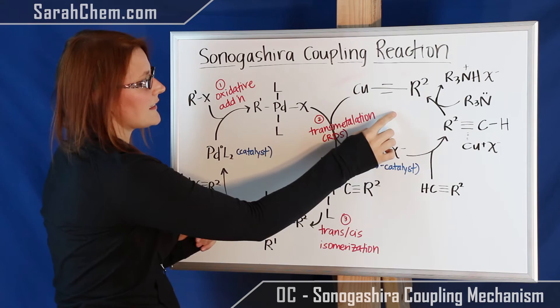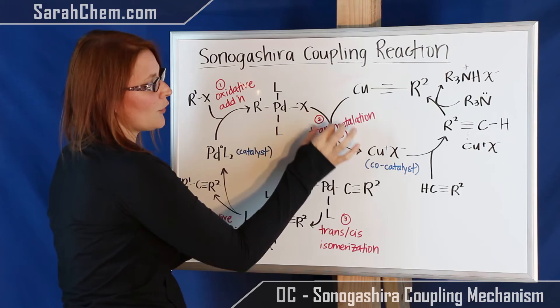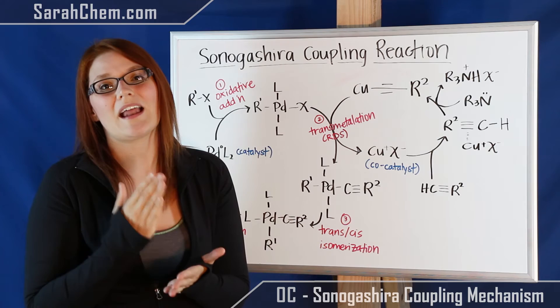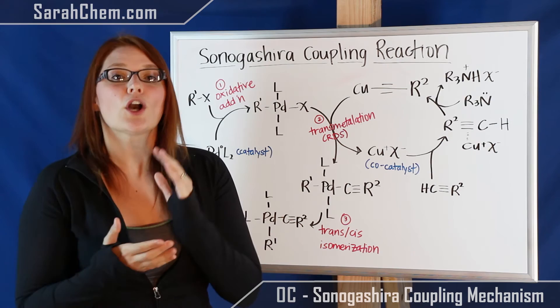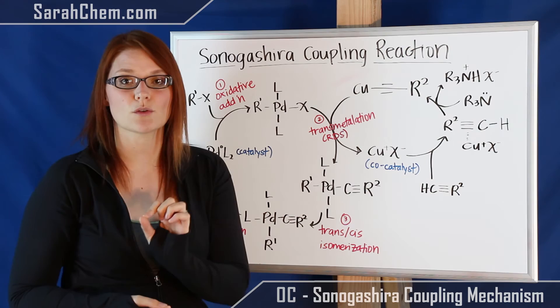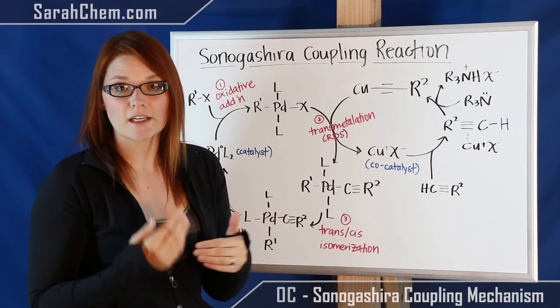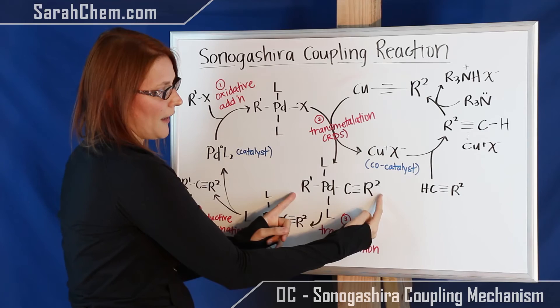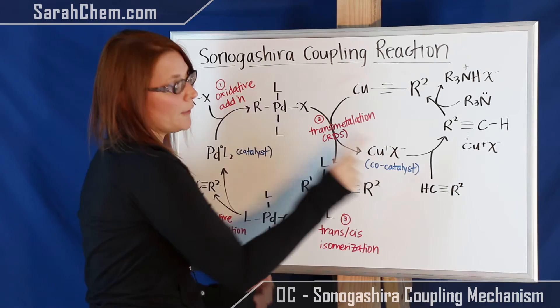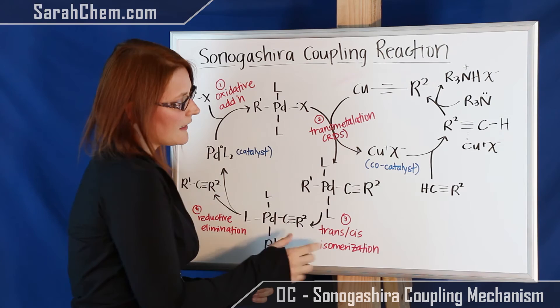Now in step two, the copper-alkyne complex we formed in the copper cycle is going to react with the new palladium complex. They undergo a transmetallation. Carbon will move onto a metal group that has an electronegativity value closest to its own — carbon's electronegativity value is 2.5, copper's is 1.8, and palladium's is 2.4. So palladium is significantly closer to the electronegativity of carbon, meaning this carbon will shift onto the palladium for energetic purposes. This forms a new compound where the carbon has transmetallated from copper onto palladium, and the X gets moved back onto the copper, which is how we reform our copper catalyst.